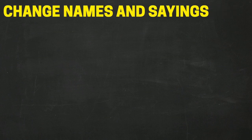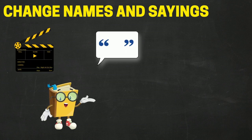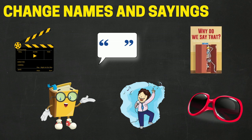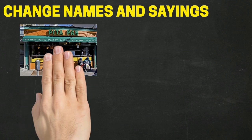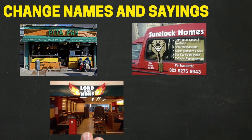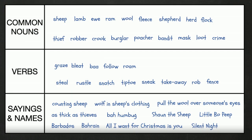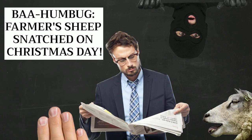A third way to create puns is to change well-known names and sayings. These could come from movies, books, quotes, songs, idioms, or celebrities. Have a look at these examples. Is there anything in our word bank that we can use? Yes, I think these two can be changed into a pun. Bah Humbug. Farmer's sheep snatched on Christmas Day.